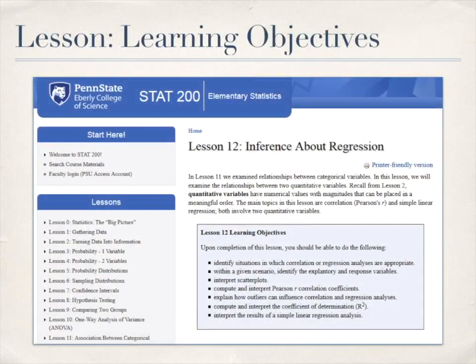The course that we're going to look at today is the online version of STAT 200. This is one of the undergraduate level introductory statistics courses that we offer through Penn State World Campus. It's a completely online course.